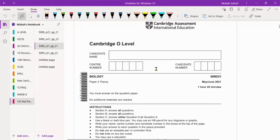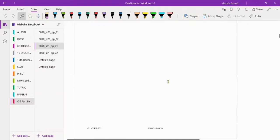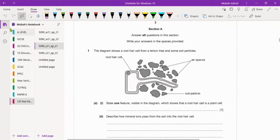Now let's start the next paper, 5090 summer 2021 question paper, different variant. Let's see question number one.